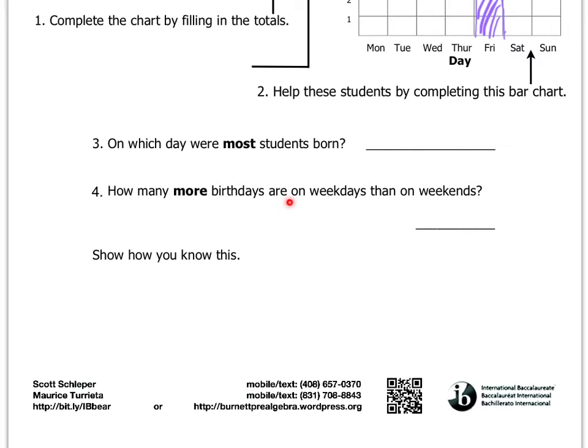Number 4 says, how many more birthdays are on weekdays than on weekends? So there, you're going to add up all the birthdays for Monday through Friday, which are weekdays. And then separately, you're going to get a new figure for the number of birthdays that fell on Saturdays and Sundays. And then you're going to subtract the lower number from the higher number. It looks like weekdays will be the higher number, and weekends will be the lower number, which makes sense. There's only 2 days on the weekend and 5 days during the weekday. And then that difference between the weekday birthdays total and the weekend birthdays total, you'll write that difference here, and you'll show your math down here.